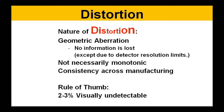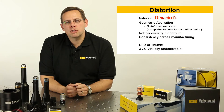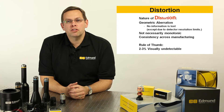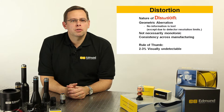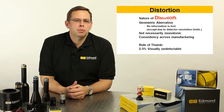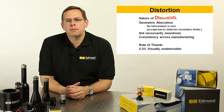Unlike some other types of aberrations that can happen in a system — such as color aberrations — where it's very hard to put information back together, with geometric aberration, since the information is misplaced and we know how much it's been misplaced by, we can simply remap it or measure it out of the system.